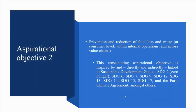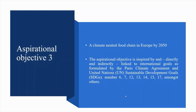Aspirational Objective 2: prevention and reduction of food loss and waste at consumer level, within internal operations and across value chains. This is linked to SDG 2 Zero Hunger, SDG 6 Clean Water and Sanitation, SDG 7 Affordable and Clean Energy, SDG 9 Industry Innovation and Infrastructure, SDG 12 Sustainable Production and Consumption, SDG 13 Climate Action, SDG 14 Marine Protection, and SDG 15 Biodiversity, among others. Aspirational Objective 3: a climate neutral food chain in Europe by 2050, linked to the Paris Climate Agreement and SDGs including SDG 6, SDG 7, SDG 12, SDG 13 Climate Action, SDG 14 Marine Protection, SDG 15 Biodiversity, and SDG 17 Partnerships, among others.